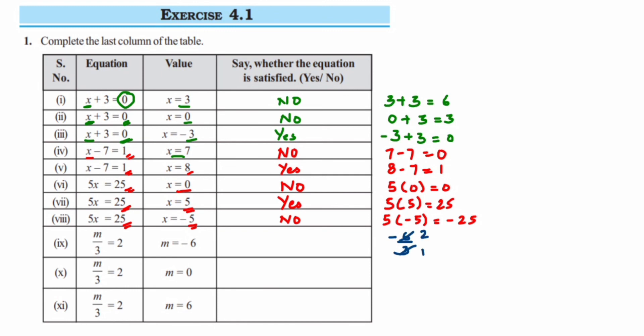The next one, m is equal to 0. So 0 upon 3, anything like 0 upon anything is always 0. But here we have on RHS side 2, it means this is no. And the last one, m is equal to 6, so 6 upon 3, cancel this, you will get answer as 2. And on RHS we have 2, so the answer is yes.